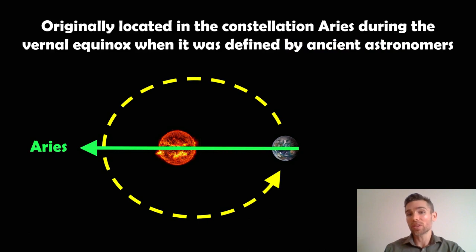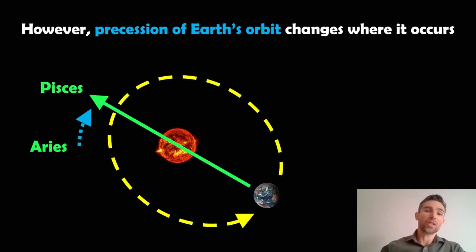It's called the first point of Aries because it originally occurred in the constellation of Aries a long time ago when it was first defined. Now it's not there anymore because Earth's orbit actually does precess. Earth's orbit is constantly precessing, or it's essentially rotating around. Earth's orbit is elliptical—I mean I was massively exaggerating here—but it precesses, so it kind of rotates around like this, which means now it's actually in a different constellation. It's not in Aries anymore despite it still being called that. It's called that mostly historically.